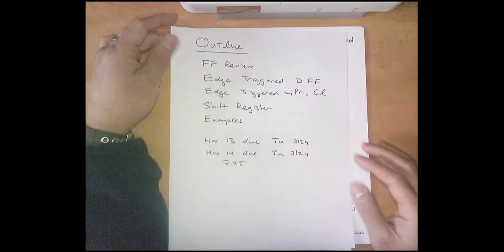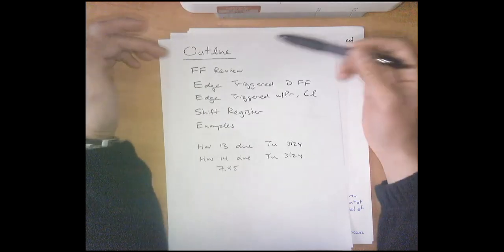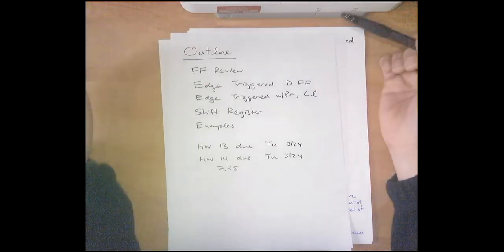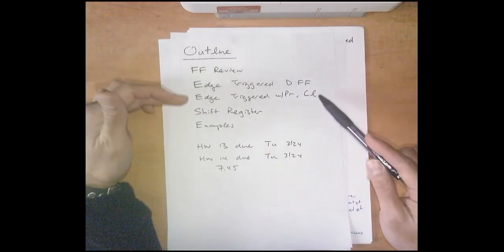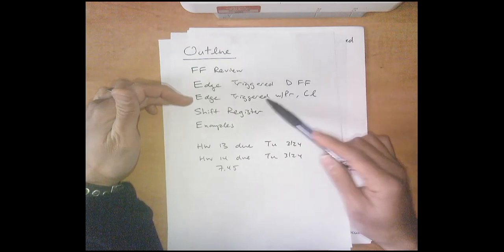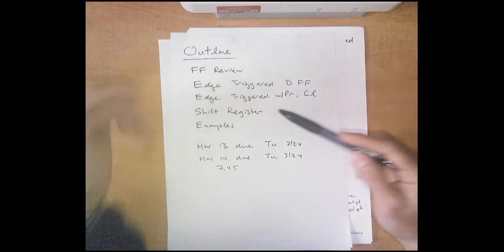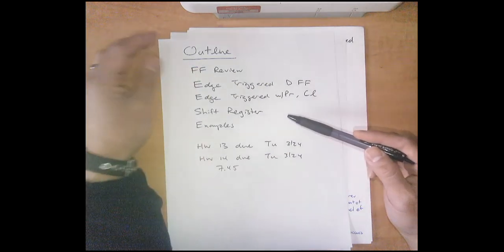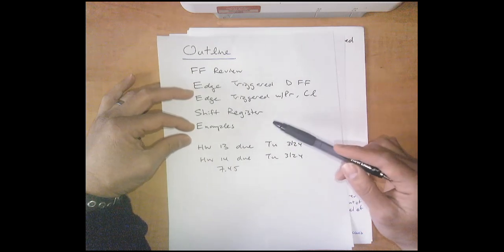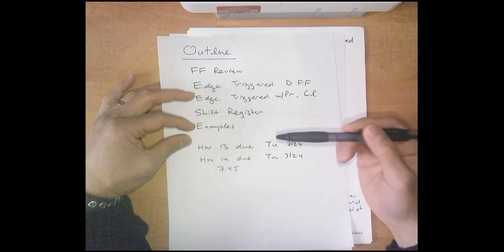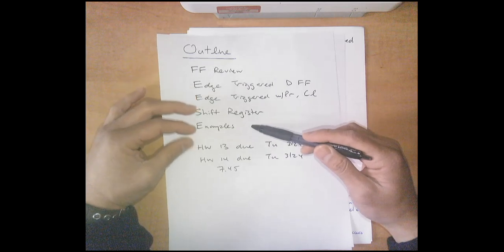Hi there ET370. This is our first online lecture. What we're going to cover today is a review of the flip-flops from last lecture, then introduce the new concept of an edge-triggered flip-flop. We'll talk about edge-triggered flip-flops with preset and clear, then go into shift registers, which allow computers to pass data sequentially in series. Finally, we'll go through examples related to your homework, including a frequency doubling or halving circuit.